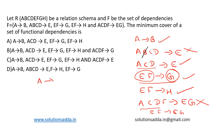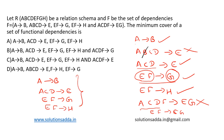So the minimal cover is: A determines B; ACD determines E; EF determines G; EF determines H. These are the minimal set of dependencies required, and this is the minimum cover.